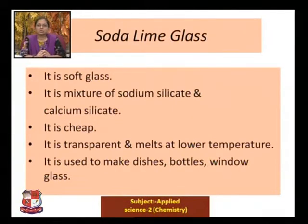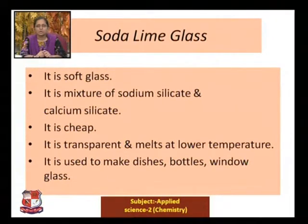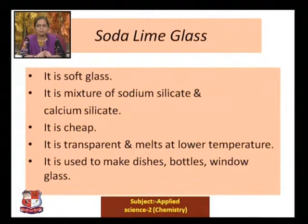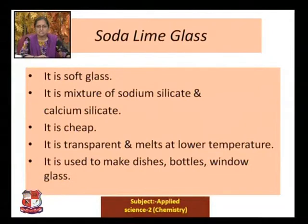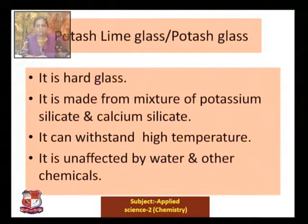Now covering the different varieties of glass. The first is soda lime glass — it is a soft glass formed by a mixture of sodium silicate and calcium silicate. It is cheap, transparent, and melts at a lower temperature. It is used to make dishes, bottles, window glass, etc.